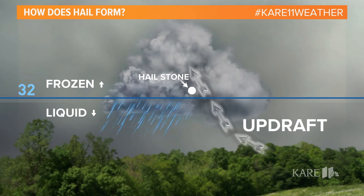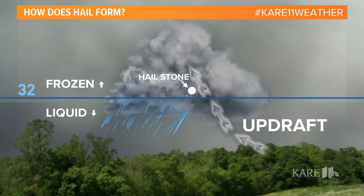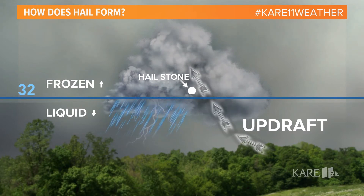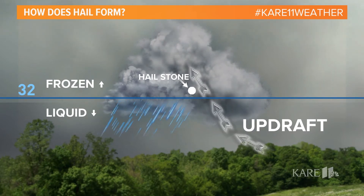Hail is something we get a lot of in the summer, but how do you get chunks of ice when it can be 90 degrees outside? Well, it all has to do with the dynamics of a thunderstorm and temperatures way up in that storm.